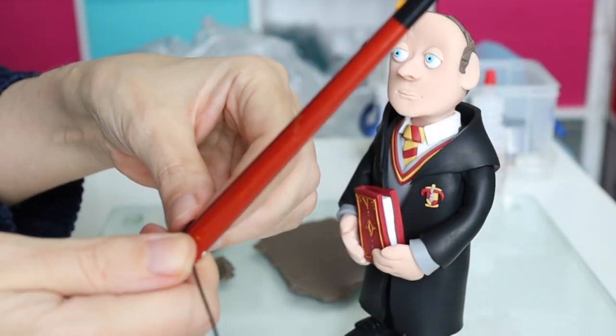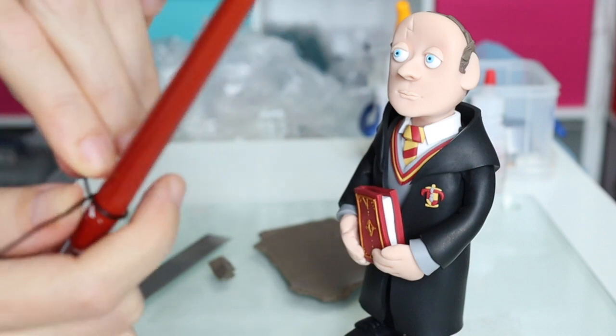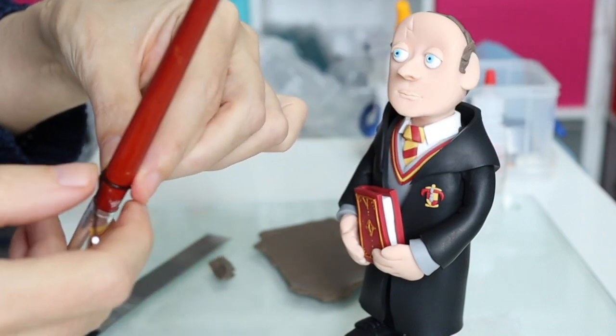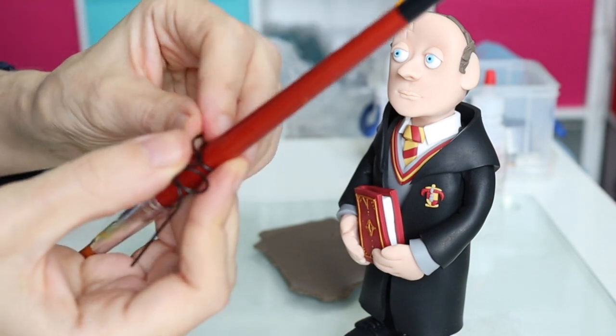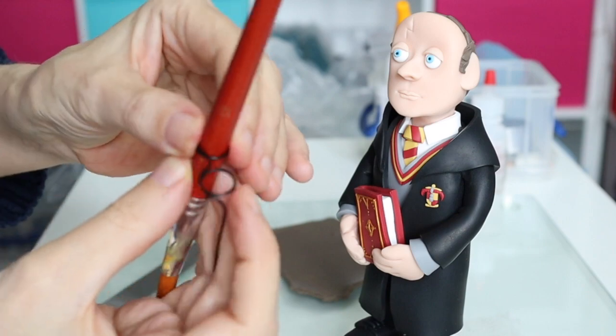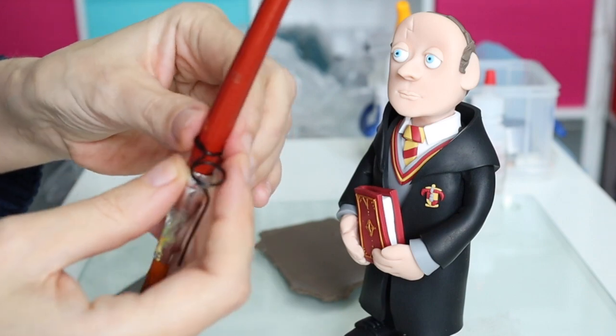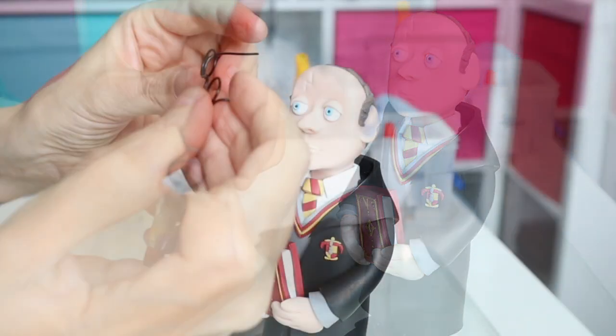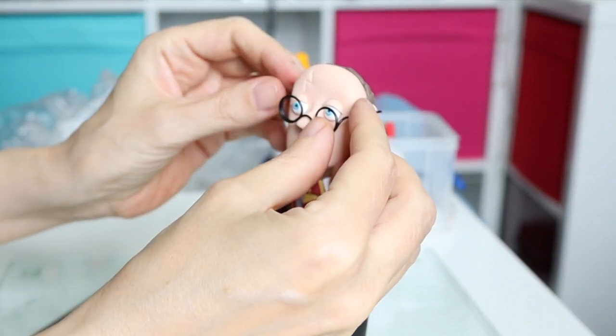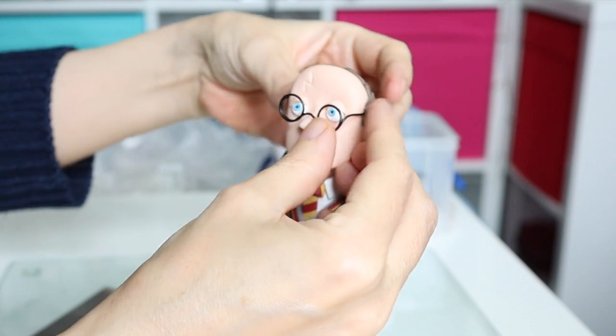Now I'm going to move on to creating his glasses. I've got some black craft wire here, so it's just a case of wrapping it around the brush that I have here, which is the largest implement I could find to wrap them around. I think they're of an okay size - I don't think they need to be too big against his eyes.